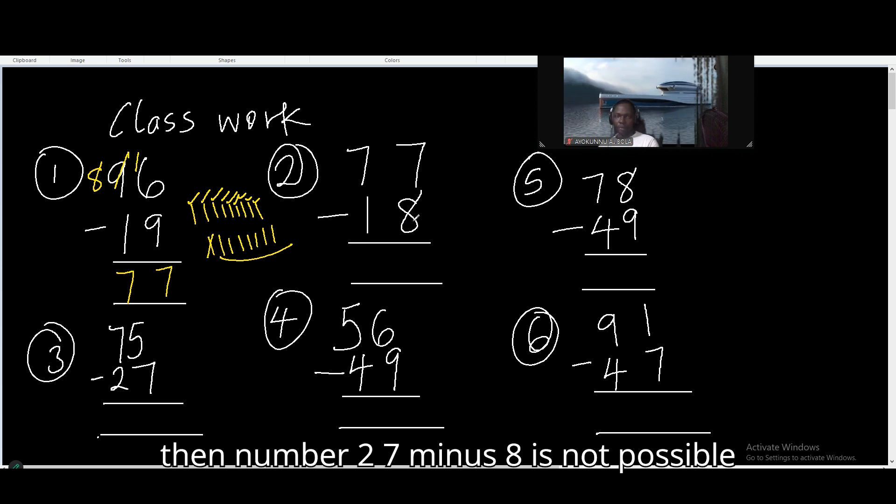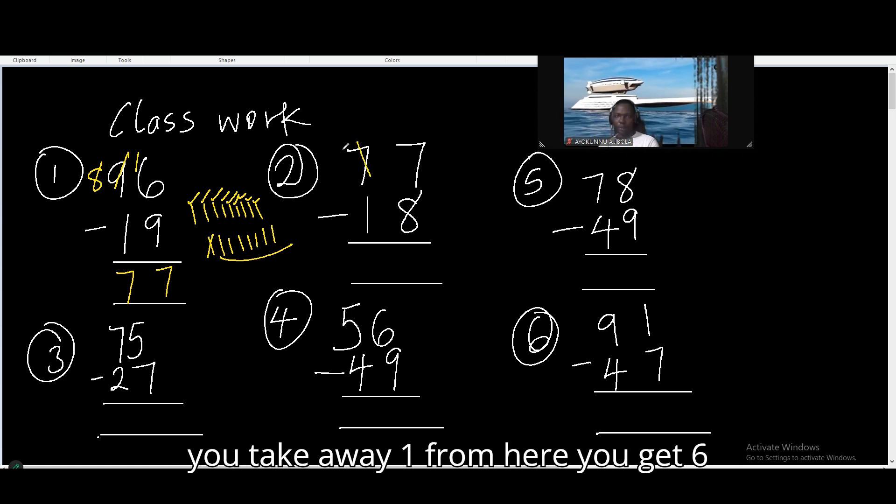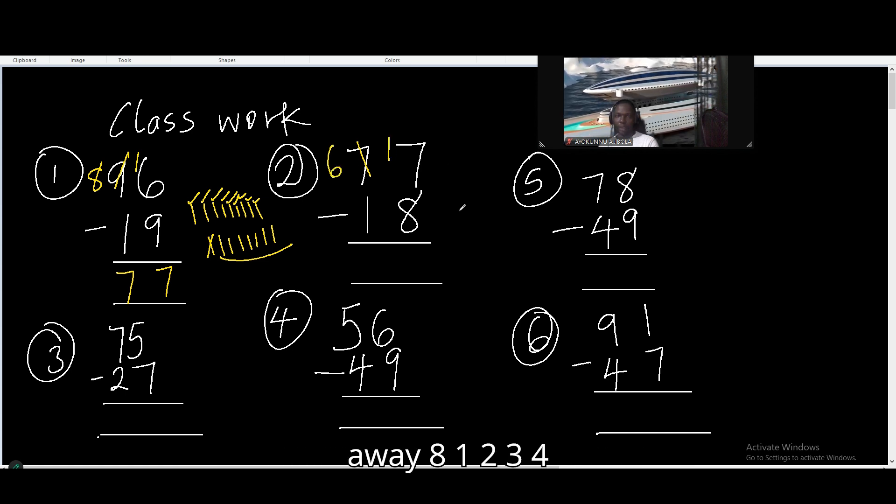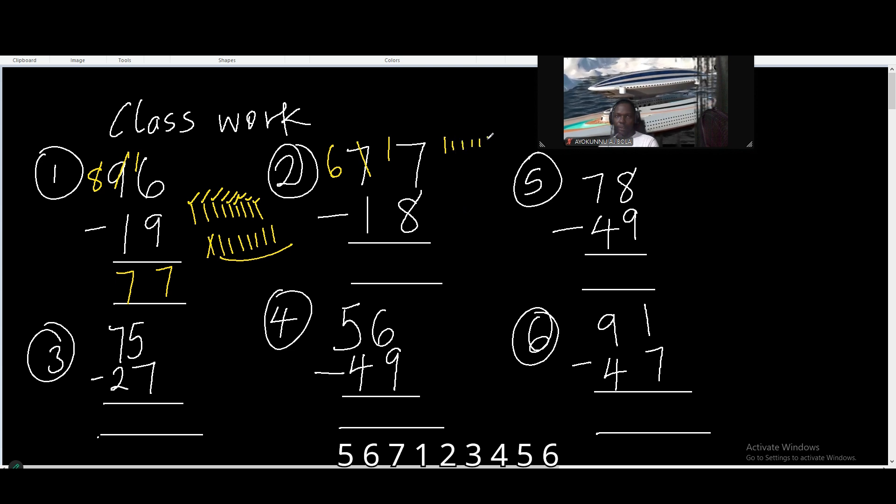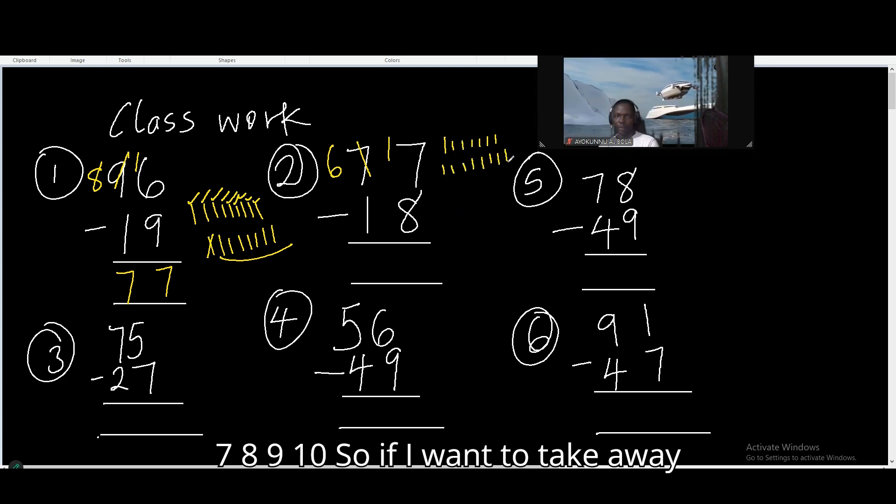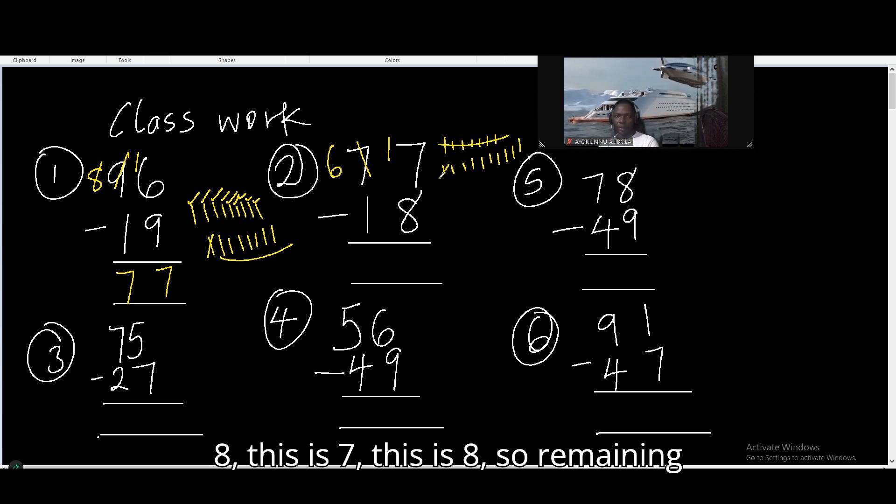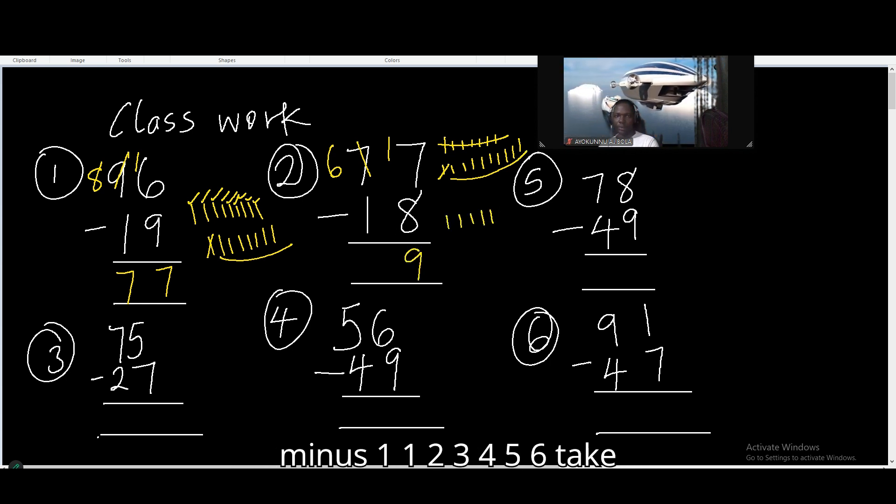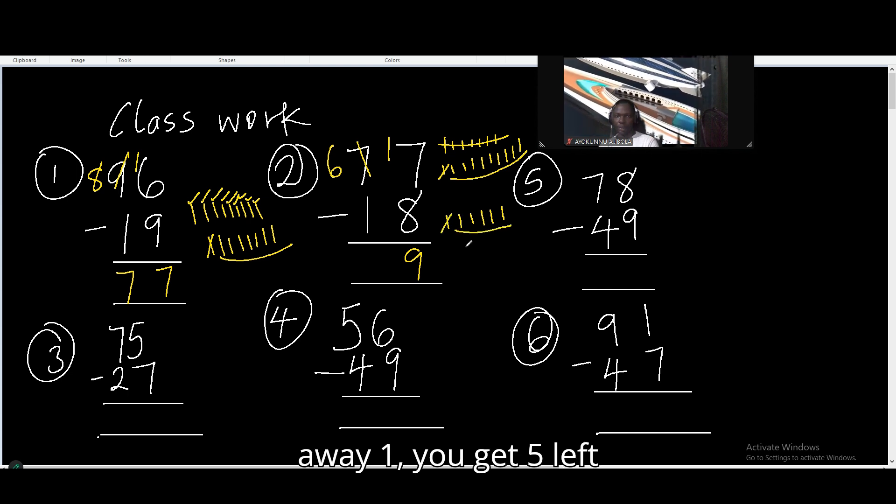Then number 2. 7 minus 8 is not possible. You take away 1 from here. You get 6. Then you make 17. So 17, take away 8. If you want to take away 8, this is 7, this is 8. So remaining 9. Then you got 6 minus 1. I take away 1, you get 5 left.